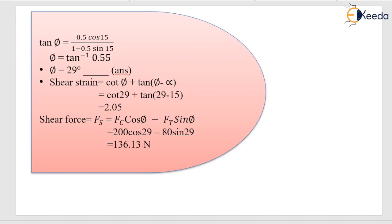For the shear force, we don't have shear area or shear strength, but we can use Merchant's diagram. The relation between actual and measurable forces gives: Fs = Fc·cos(phi) - Ft·sin(phi). With Fc = 200 N, Ft = 80 N, and phi = 29 degrees, the shear force is 136.13 N.